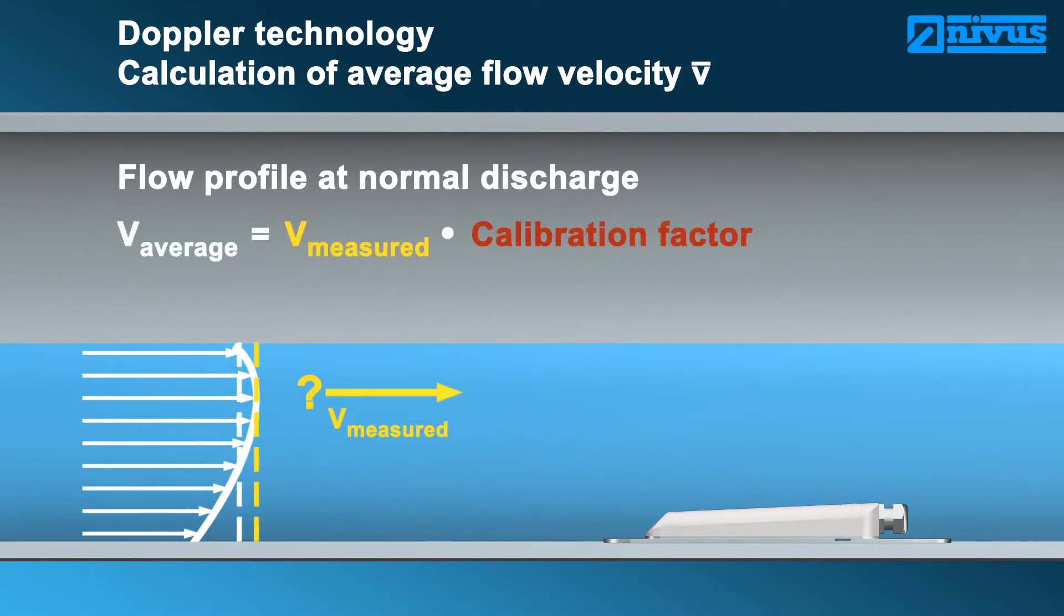To counteract this shortcoming, the average flow velocity is computed with the aid of a calibration factor. This factor must be determined previously, such as by implementing a grid measurement, which is fairly time-consuming and expensive.